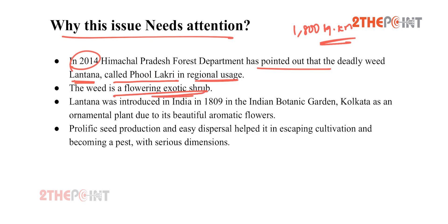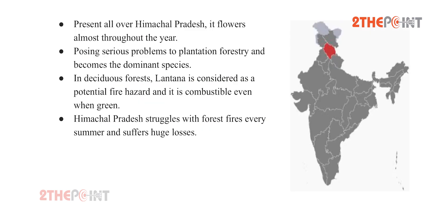This weed is a flowering plant which is an exotic herb found abundantly in the state, threatening the majority of native plant species. Lantana was introduced in India in 1809 in the Indian Botanic Garden, Kolkata, as an ornamental plant. Due to its beautiful aromatic flowers, prolific seed production, and easy dispersal, it escaped cultivation and became a pest of serious dimensions.